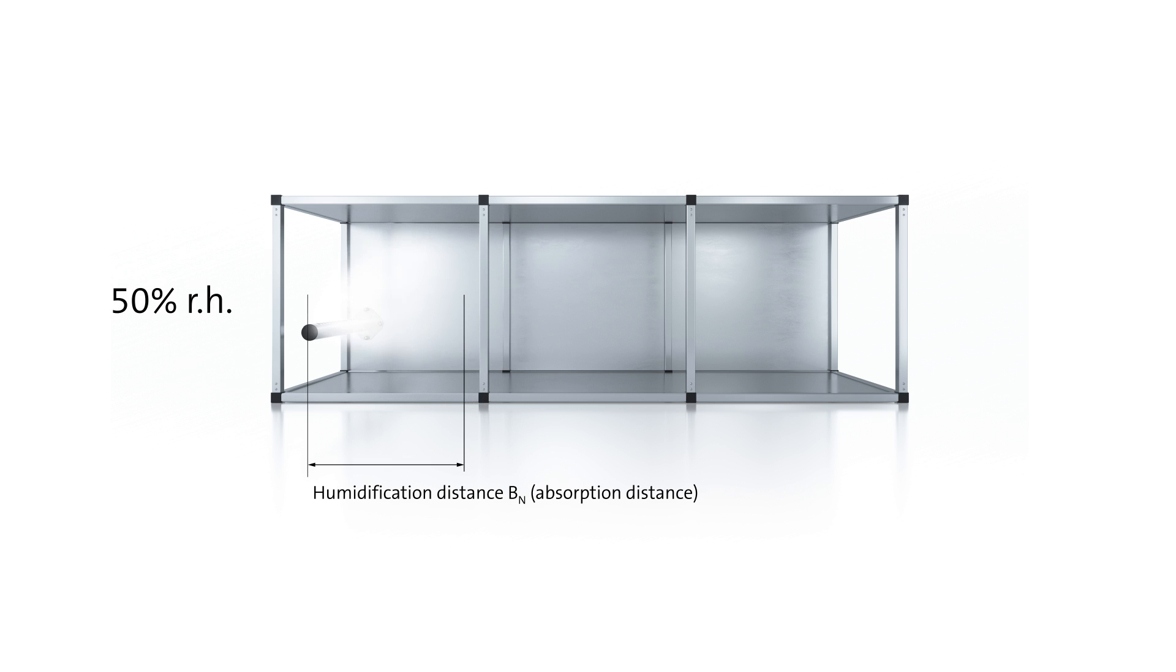The humidity of the air is also relevant because the higher the humidity of the air, the lower further humidity absorption by the air becomes. Consequently, if the air is very humid, say at 80% relative humidity, a longer humidification distance BN needs to be provided. Vice versa, at only, say, 30% relative humidity, a shorter distance is required.